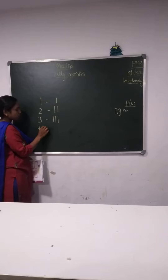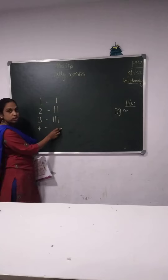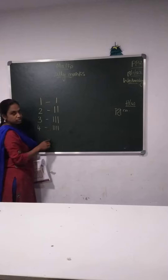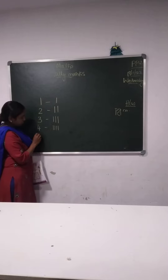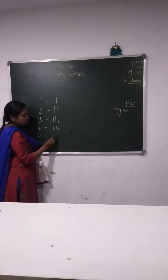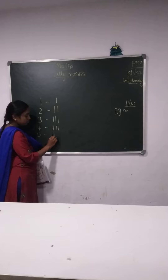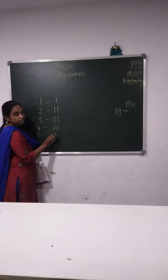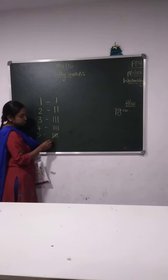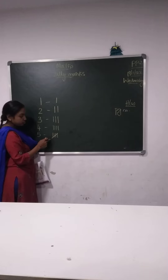Then 4 — so how many lines we should draw? 4 lines. Now next is 5. So how many lines we should draw here? 5 lines. How we will draw 5 lines? 1, 2, 3, 4. For number 5 you have to draw — you have to put the slash. For number 5 you will put the slash.